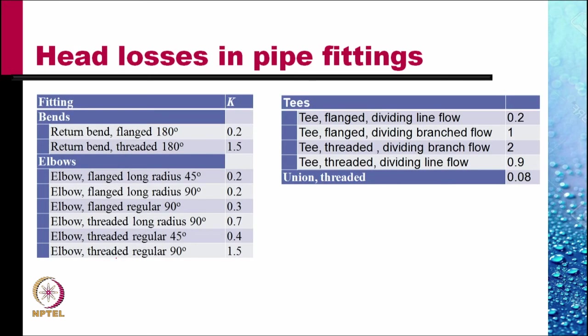This table gives you the head losses for the various kinds of pipe fittings, bends, elbows, tees, union. These are typical values. The piping engineers refers to the data supplied by the manufacturer of the fittings to determine what the actual value of k would be.